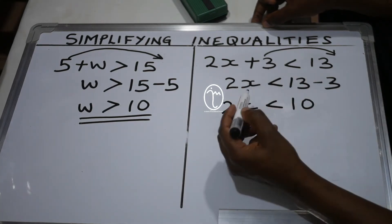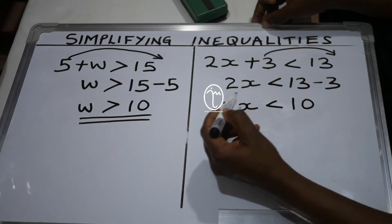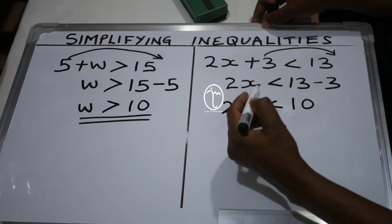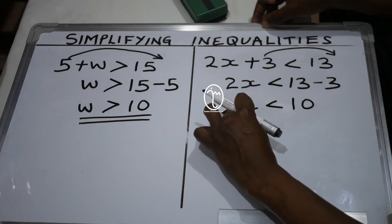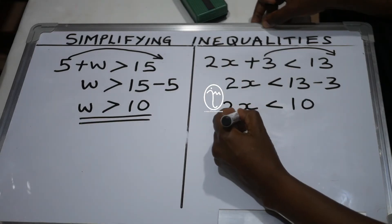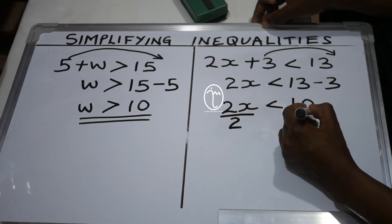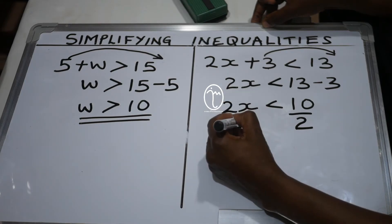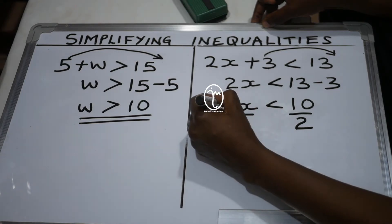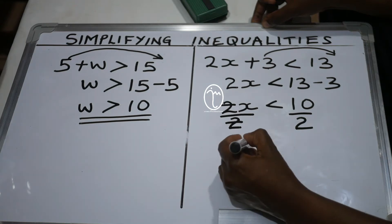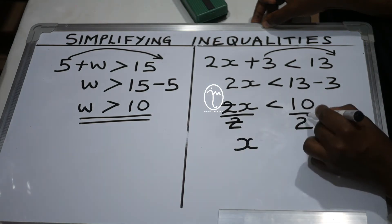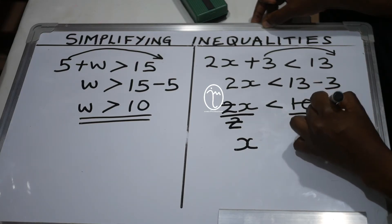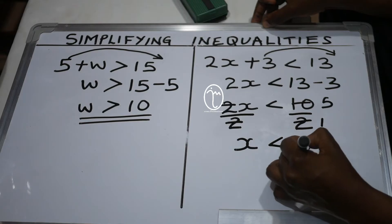Since we want the value of x and we have 2x — meaning 2 times x — we divide both sides by 2. Dividing the left side: 2 cancels with 2, leaving x. Dividing the right side: 10 divided by 2 is 5. So x is less than 5.